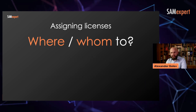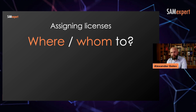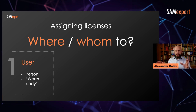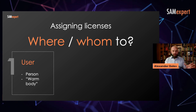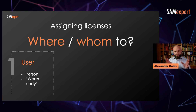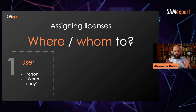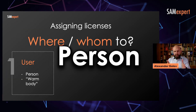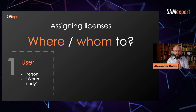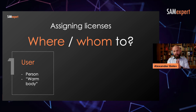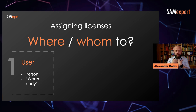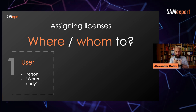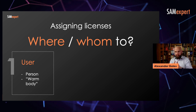Where do you assign licenses? In the Microsoft world, there are three areas. User licenses are assigned to users. What is a user? In the Microsoft licensing world, a user is a person — one person. If that person has multiple accounts, they need one license, usually, if it's a user license. It's one individual with all their accounts. You assign a user license to that one person.